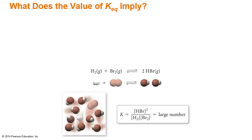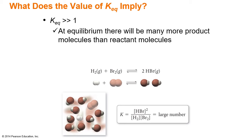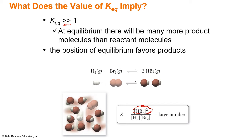So what does this K value imply? If we have a value that is a large number — larger than one — that means that at equilibrium the concentration of the products is going to be larger. So more products are going to be present in our reaction than reactants, meaning products are favored in our reaction when the equilibrium constant value is larger than one.